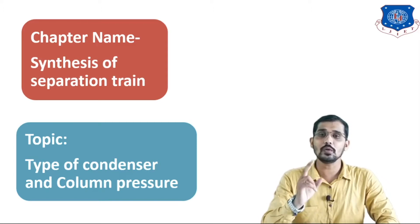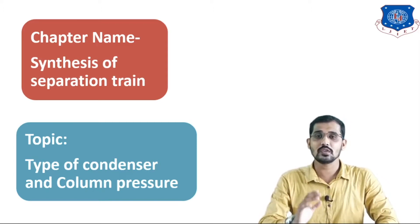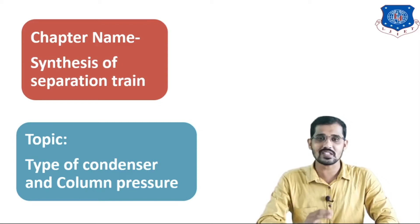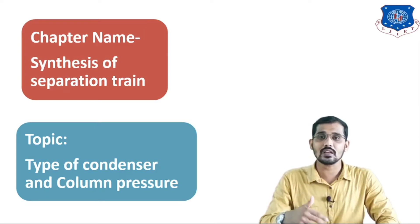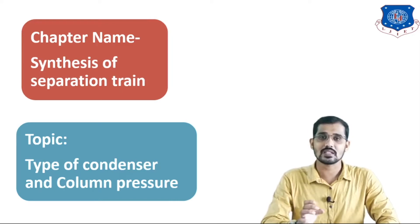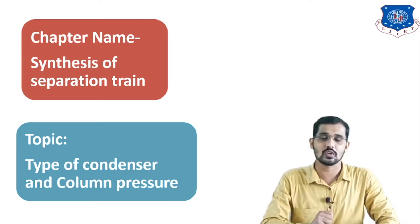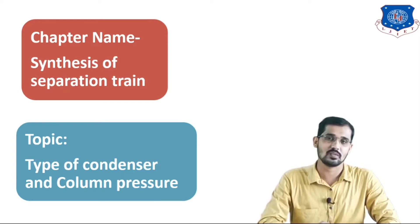We are using two heat exchangers. The first one is the reboiler, which we use in the stripping section to heat the liquid mixture. After that, for condensation purposes, we use another heat exchanger — the condenser — which is used in the upper section of the distillation column, that is the rectifying section.